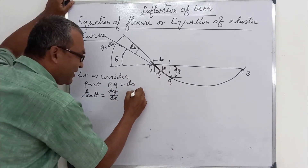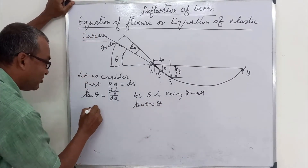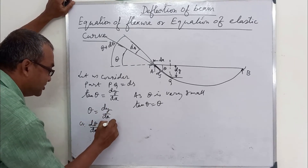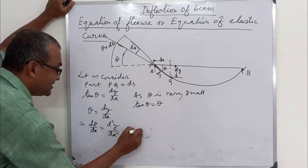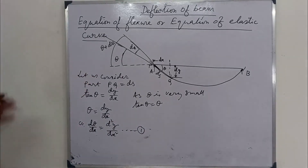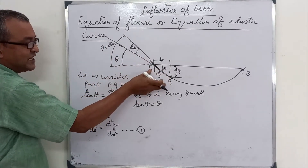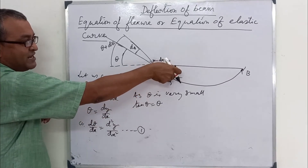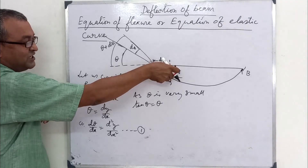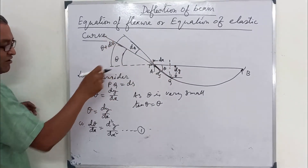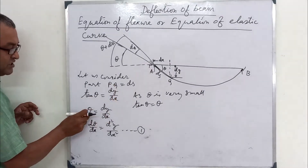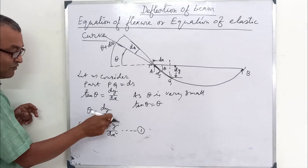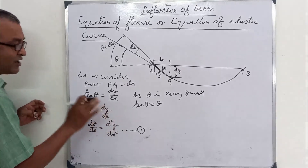As theta is very small, tan theta equals theta. Therefore, theta equals dy/dx, and differentiating, d theta/dx equals d²y/dx². For the small element ds, the horizontal projection is dx and the vertical deflection is dy. The angle is theta, and since theta is very small, tan theta ≈ theta. Differentiating gives d²y/dx². This is equation number one.